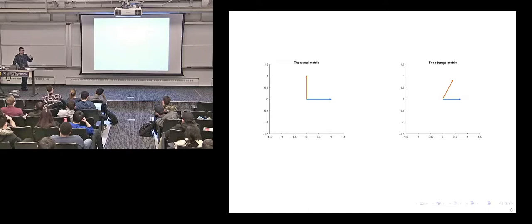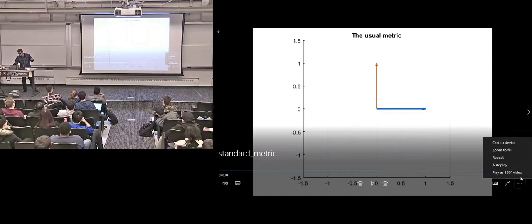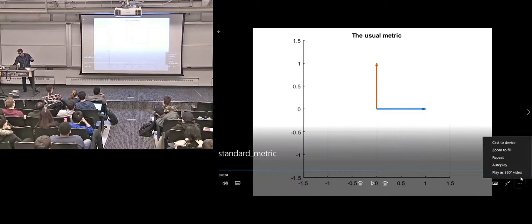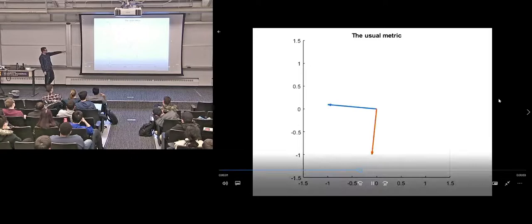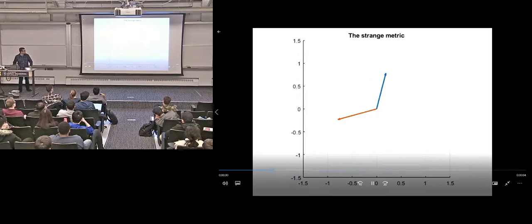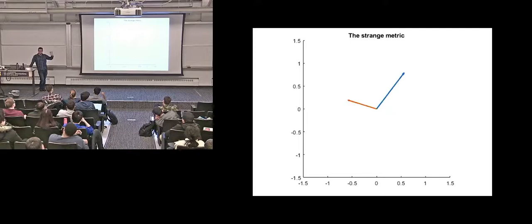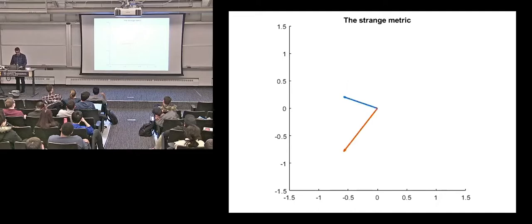Sticking a matrix inside the product changes the notion of geometry: with the normal dot product, two unit orthogonal vectors look a certain way, but using a metric with a different matrix, different vectors become orthonormal. Orthonormal still makes sense, it just doesn't mean what you think it means. The effect of changing this matrix is basically shearing, rotating, and transforming the space. You can make up any such matrix and the geometry you end up with is perfectly valid — it just looks a little odd.